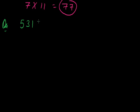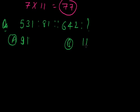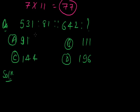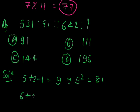Next question: 5,3,1:81::6,4,2:? Here option A, 91. Option B, 111. Option C, 144. Option D, 196. Here solution: in the figure 5,3,1, we add that digit: 5 plus 3 plus 1, that is 9. So 9 square is 81. As it is, 6 plus 4 plus 2 is 12, that is 12 square. Answer is 144.